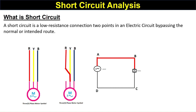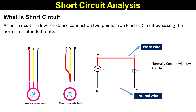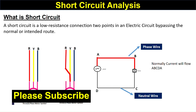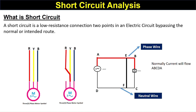Consider a simple diagram with a phase wire and a neutral wire, where current normally flows from A to B, B to C, C to D, and D to A. But if points A-B get connected via a path E-F, the current now flows A to E, E to F, F to D, and D to A. This is not the normal intended path — this is called a short circuit.